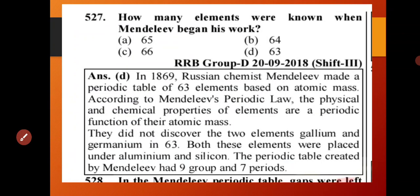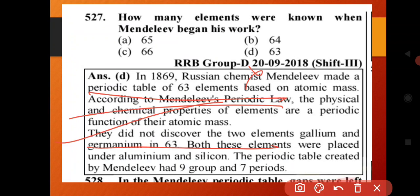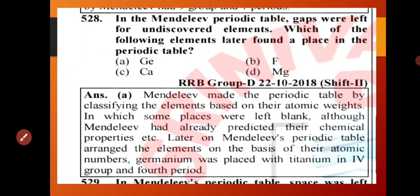How many elements were known when Mendeleev began? Mendeleev knew 63 elements. In Mendeleev's periodic table, we will discuss some of the elements.